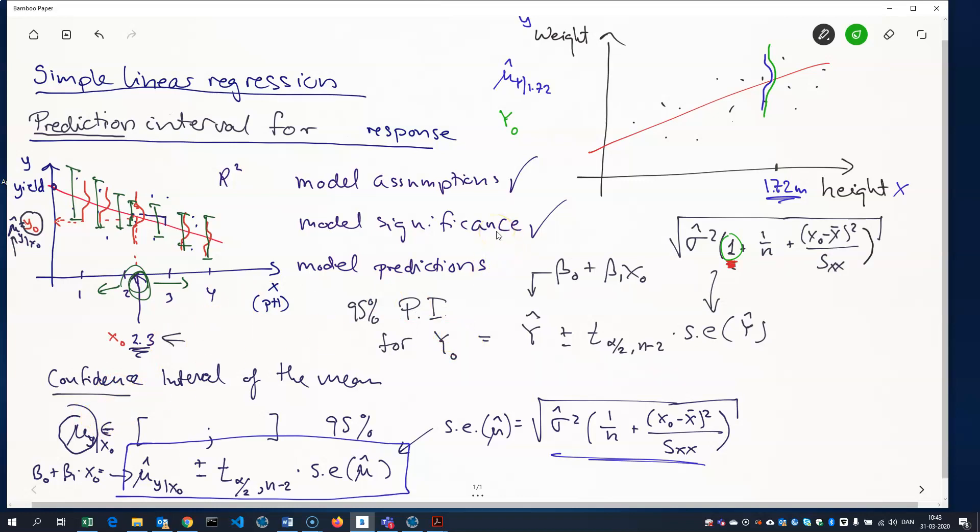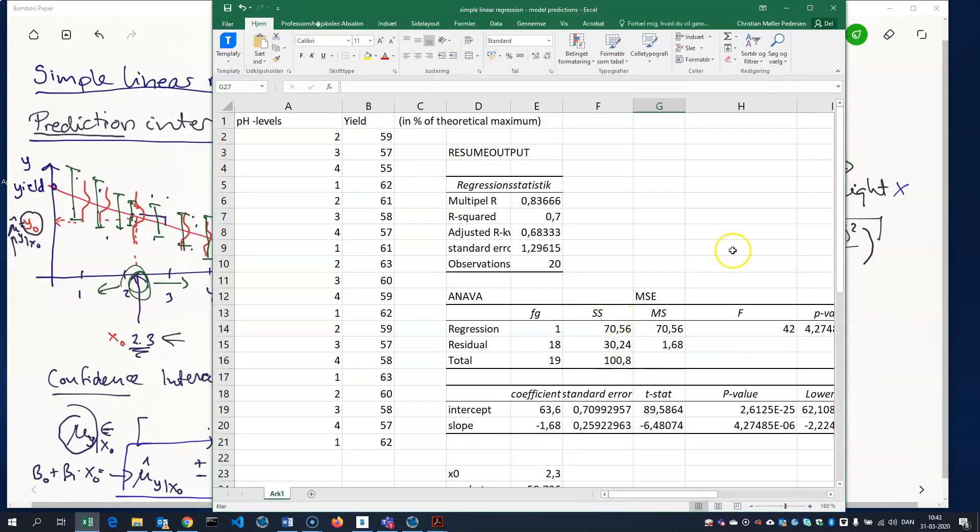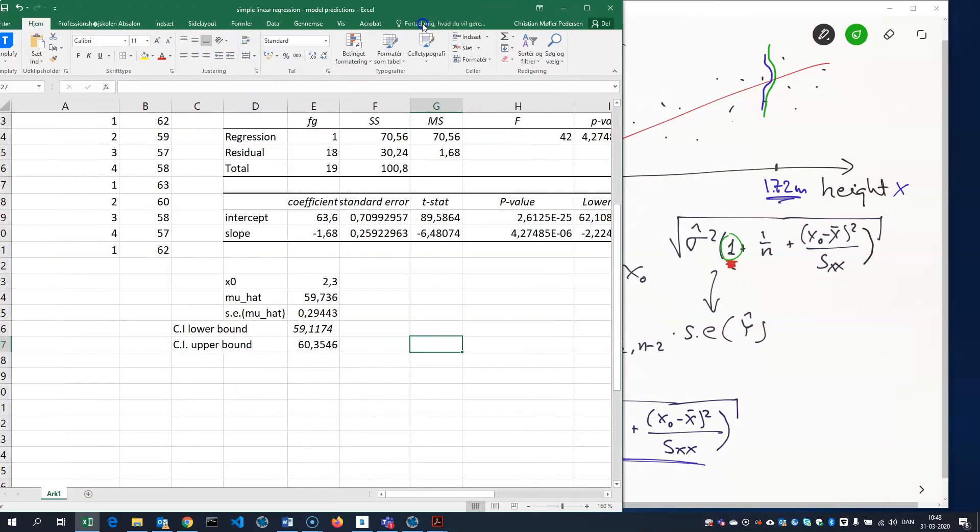But doing the calculation is very much the same. We can go back to the Excel sheet and just modify our formula a little bit here. So we did compute the confidence interval for the mean here. So now I just want to change my notation to y hat. And the formula for the standard error, all I need to do is to include a one here. So I'll do that one plus.